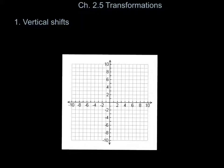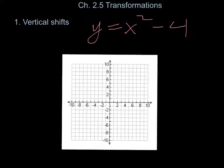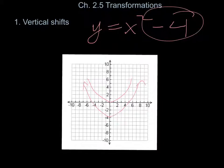For vertical shifts, you recognize it by the number following x. So if you have y equals x squared, that's your standard parabola. If you have y equals x squared minus 4, you've shifted it down 4 units — it used to start at the origin, now it starts at negative 4. If it's positive 4, it shifts up 4.